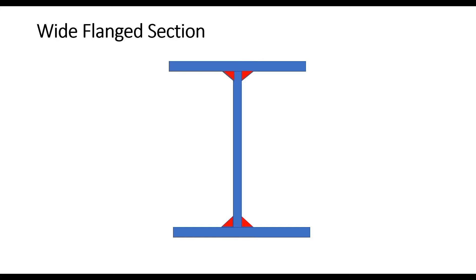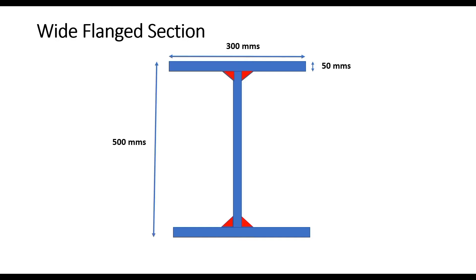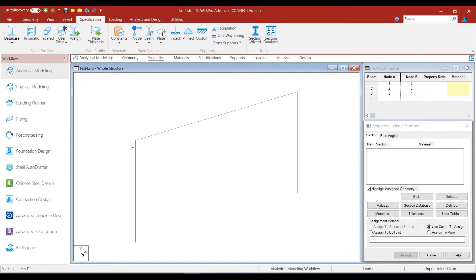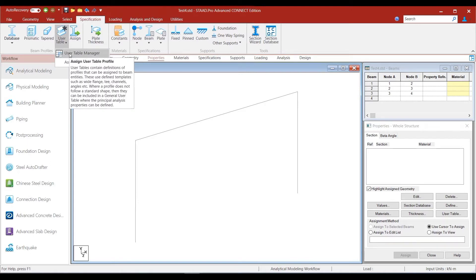The question is: how can we define these sections in STAAD Pro? Let us say we want to define a custom wide flange section with flange width of 300 millimeters, flange thickness of 50 millimeters, total depth of 500 millimeters, and web thickness of 30 millimeters. To define this, we go to the Specification option from the main menu bar, click on the User Table option in the beam profile menus, click on the drop-down, and click on the User Table Manager.